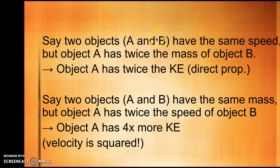Just to kind of break that down further, if you had two objects, A and B, moving at the same speed, object A has twice the mass of object B. What would result is object A would have twice the kinetic energy because it's a direct proportion with mass. But let's say those same two objects now have the same mass, but object A is moving at twice the speed of object B. Object A would have four times more kinetic energy because velocity is squared in the equation.